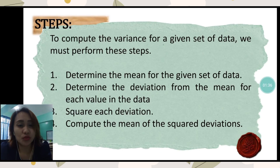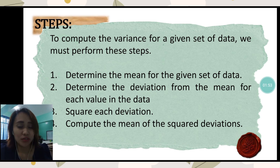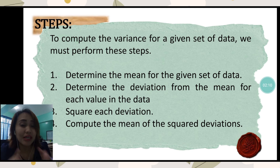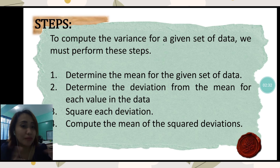Here are the steps to compute the variance for a given set of data. Number one: determine the mean for the given set of data — add all the scores and divide by how many data values are in the set. Number two: determine the deviation from the mean for each value — subtract the individual score by the mean. Number three: square each deviation. Number four: compute the mean of the squared deviations — add all the squared differences, then divide by how many numbers there are in the given data set.